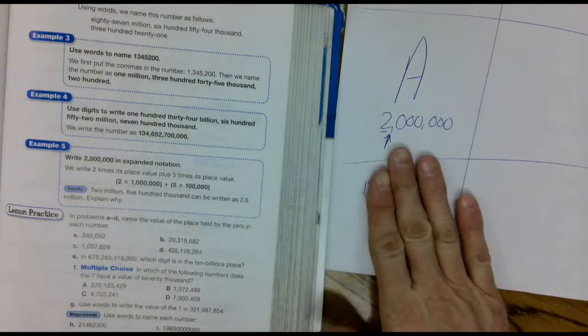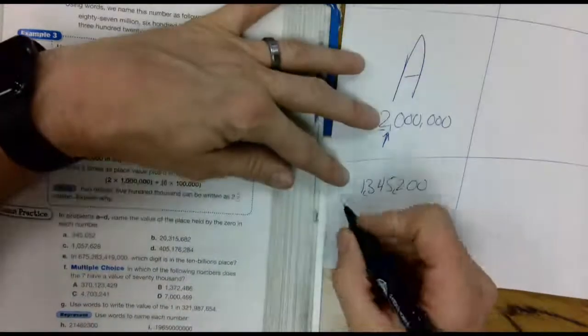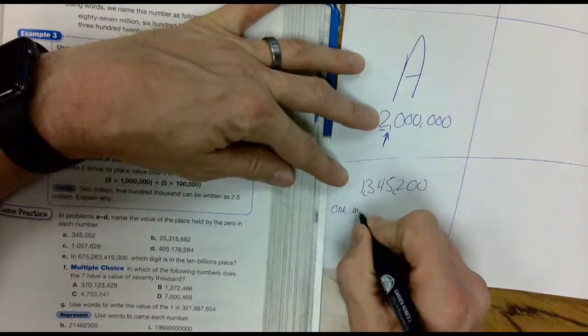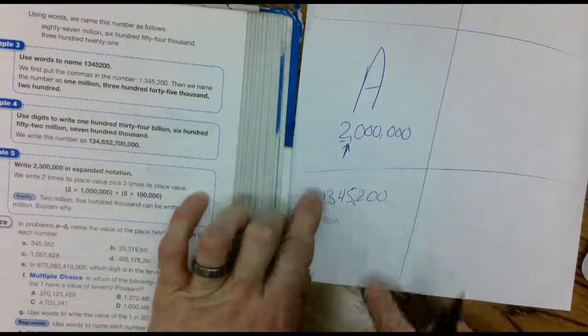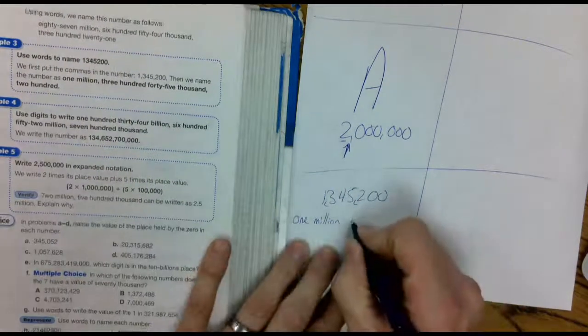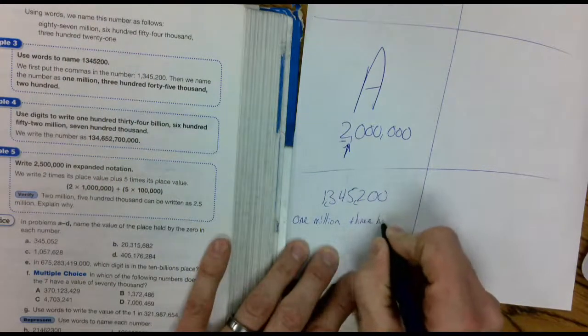Now it's really easy. Chunk it up. You got one million. Next chunk. Three hundred and forty-five thousand. Two hundred.